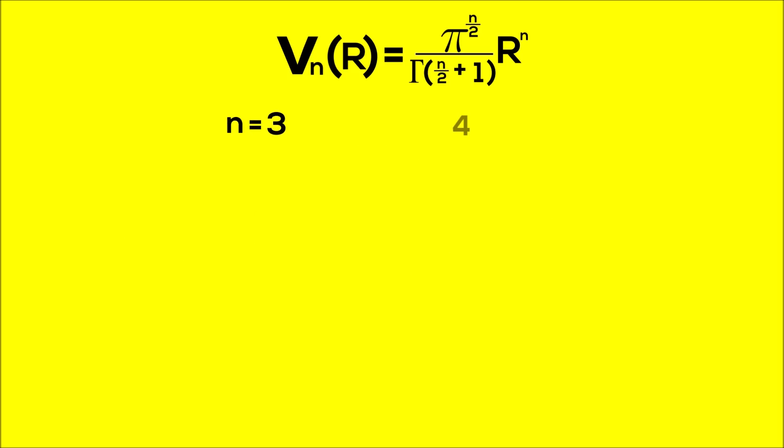Now, let's just try it for n equals 3 to see if we get 4 thirds pi r cubed, or the volume of an actual sphere. We plug in 3 for n, and we get pi to the 3 halves times r cubed all over gamma of 2.5.